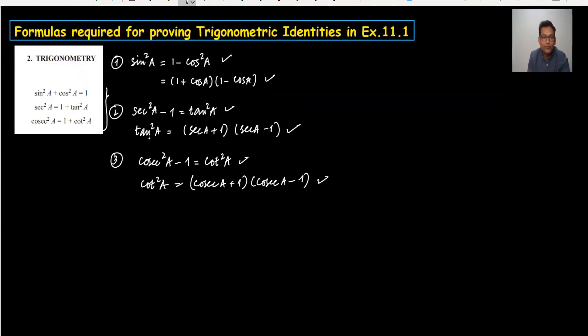Now the fourth one, we should know the inverse of sin a is 1 upon cosec. This is the most important part, or we can write cosec a is also equal to 1 upon sin a.